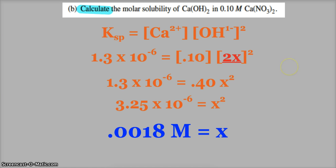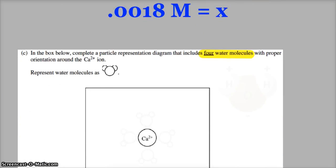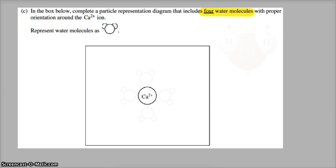The last part here, in the box below, complete a particle representation diagram that includes 4 water molecules with proper orientation around the calcium plus 2 ion. It shows us, represent the water molecules as that, our Mickey Mouses.